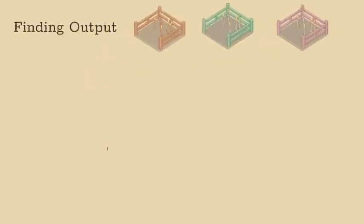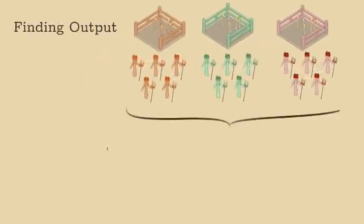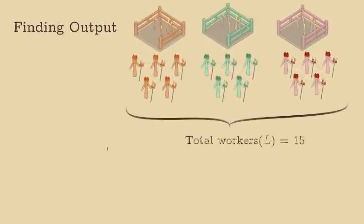To find the wage and profit share of income in the economy, we must first find the output of the economy. Imagine in this economy, we have three farms, each employing five workers. So, the total number of workers, L, is 15.